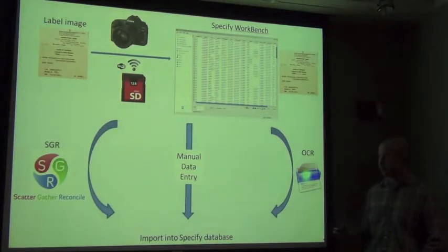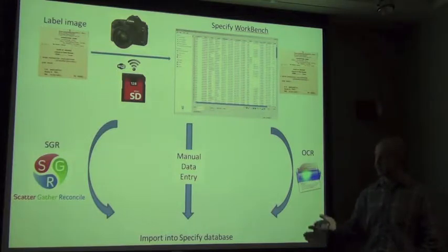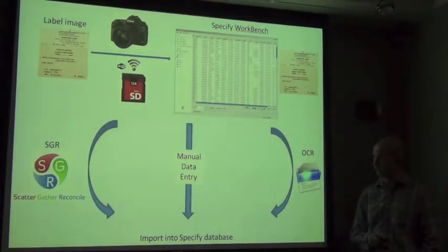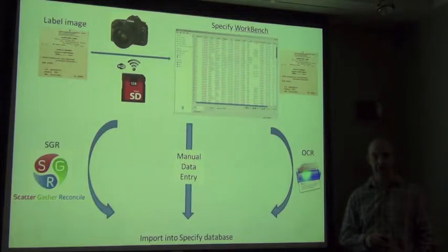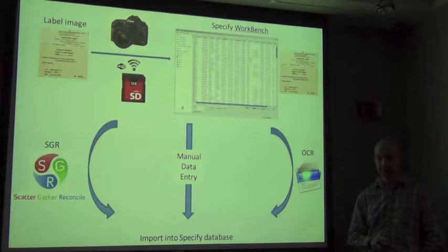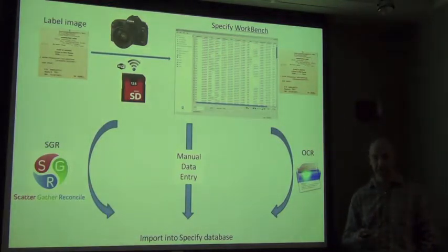The three mechanisms envisaged for doing this are: manual data entry by hand, using our scatter-gather reconcile engine which I'll talk about later, or using an OCR engine to OCR the data from the label and put it into Specify that way. This is something we are working on at the moment and hopefully will be available fairly soon.